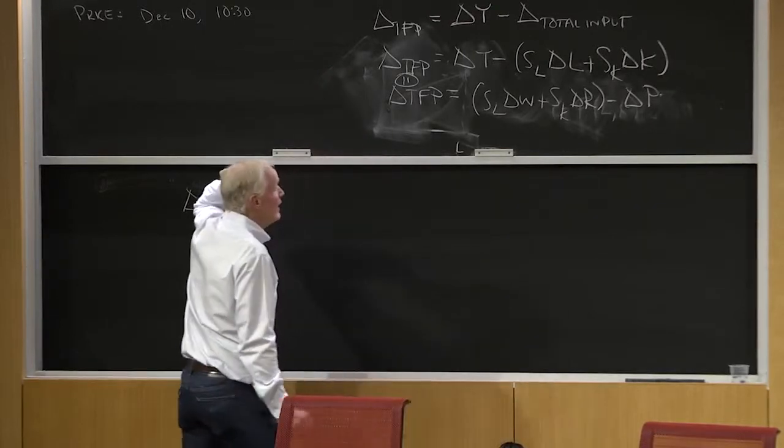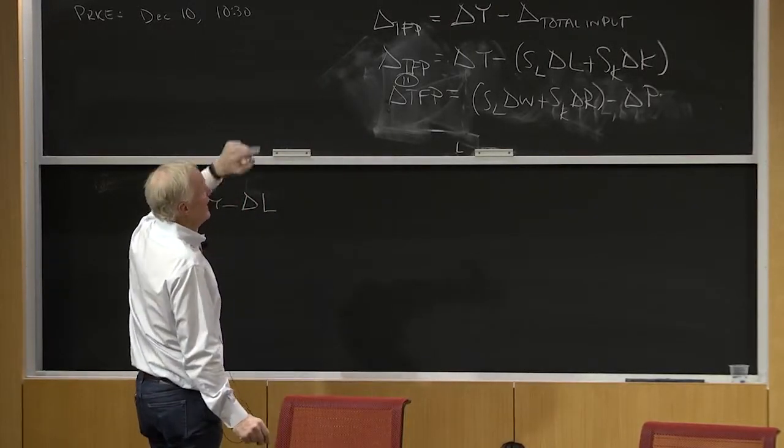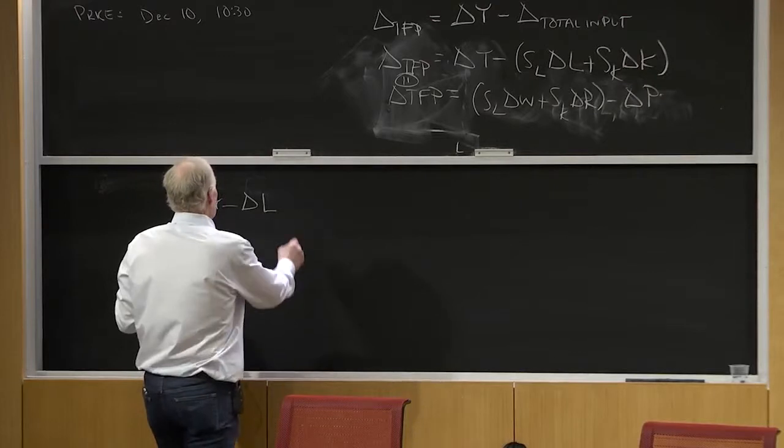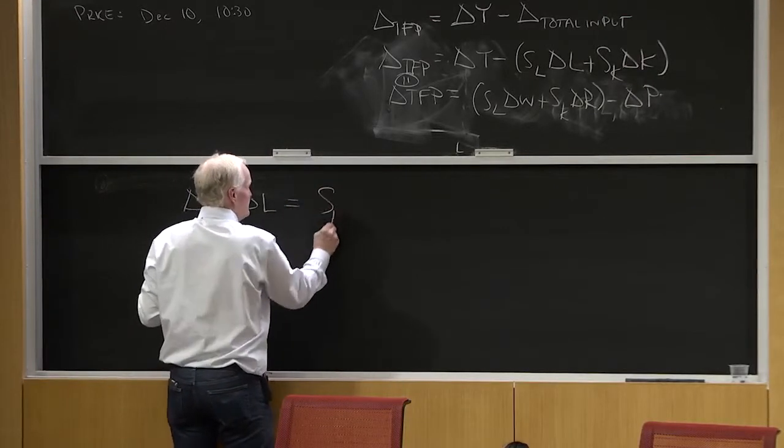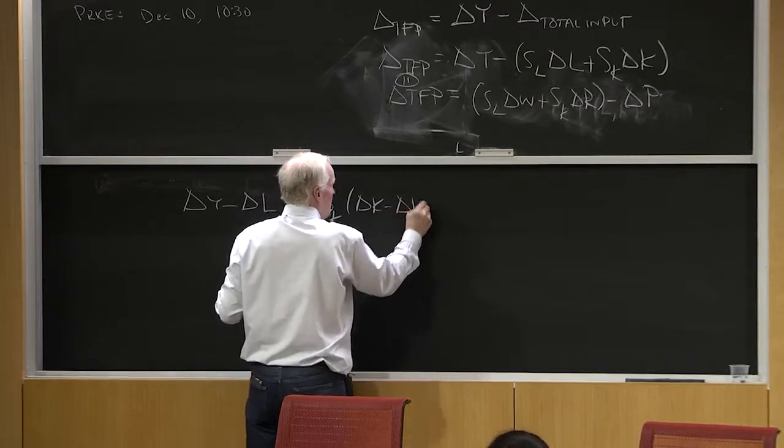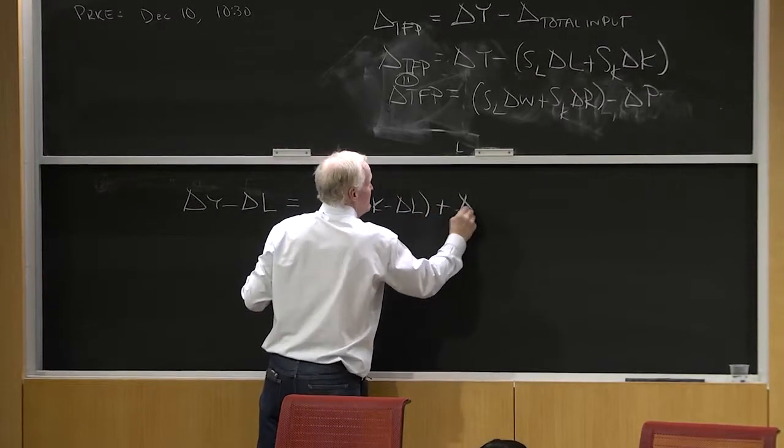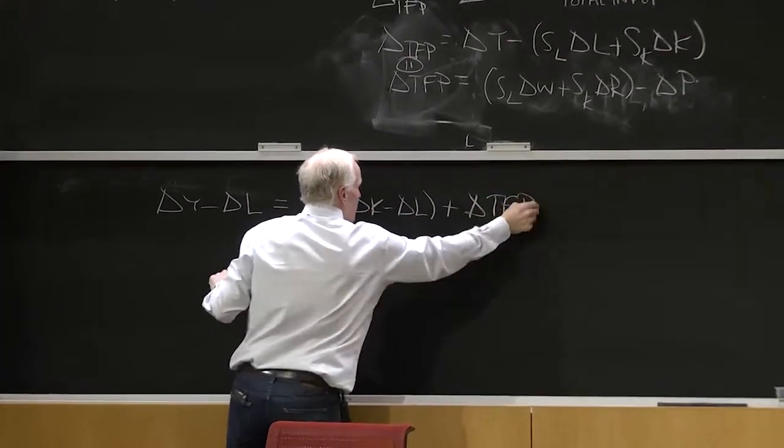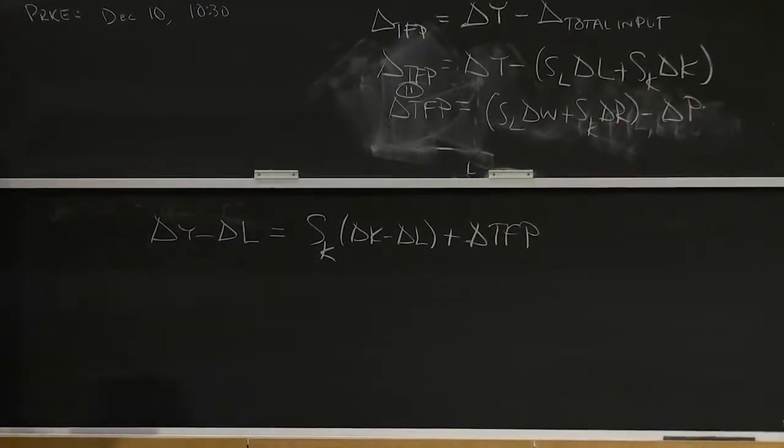Okay. Or, I'm sorry, I've got to add it to that side. So equals SK delta K minus delta L plus delta TFP. Okay, you can just verify my algebra if you want.